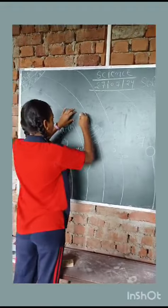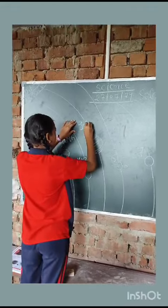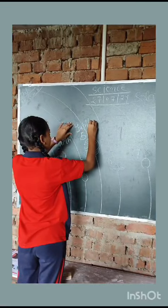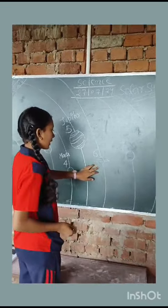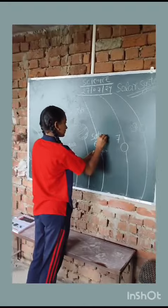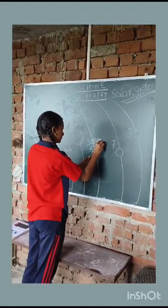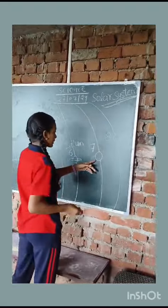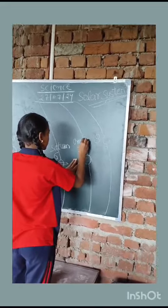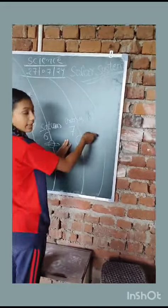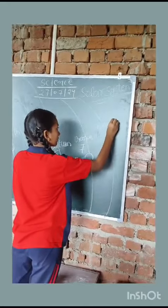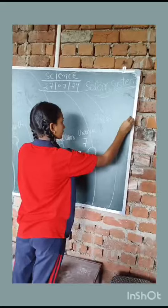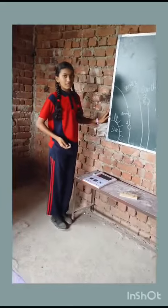This planet is called Jupiter. This planet in our solar system is called Saturn. This planet is called Uranus. This planet is called Neptune. There are 8 planets in our solar system.